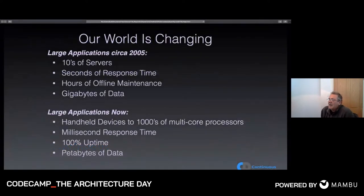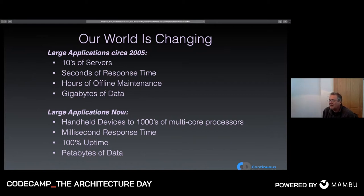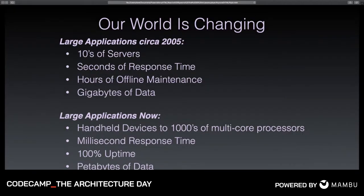Our world is changing. 15 years ago a large application probably had tens of servers, worked in seconds of response time, had hours for offline maintenance, and dealt in gigabytes of data. These days that feels normal or small. Large applications now have thousands of processors, often in distributed heterogeneous networks, milliseconds of response time, 100% uptime, and deal in petabytes of data.